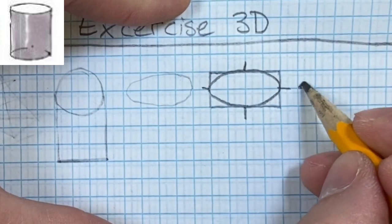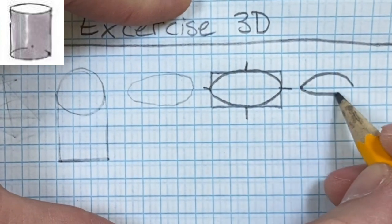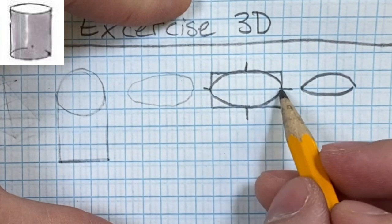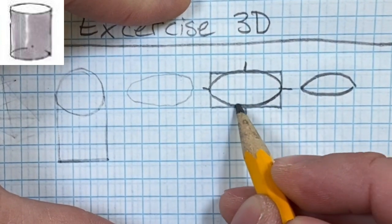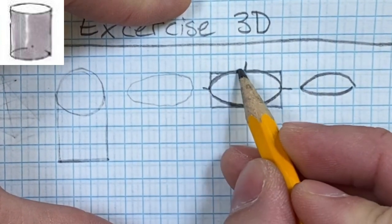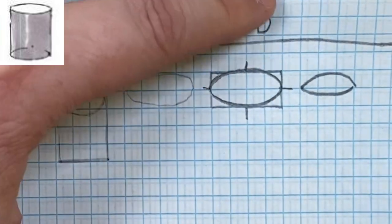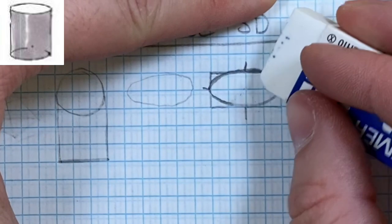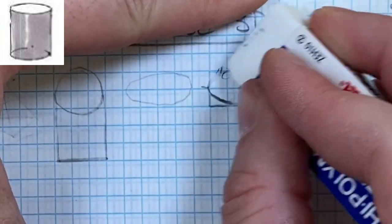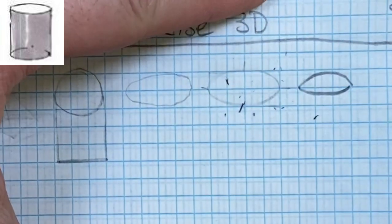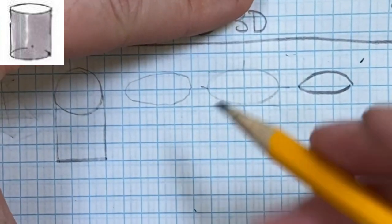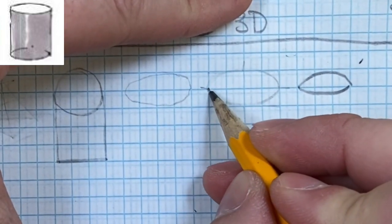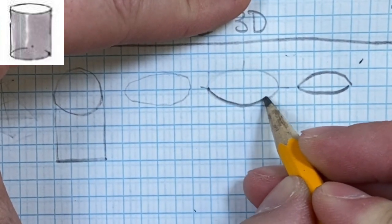Now try your best to not make an eye or a football shape. You're making an oval. And once I get that, I'm going to try to erase away my box. And I should have left with an oval.